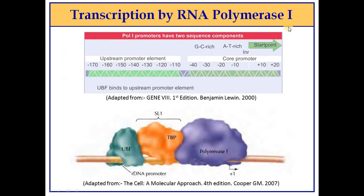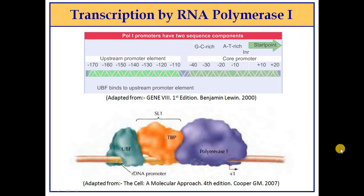For RNA polymerase 1, the promoter region contains two elements: the upstream promoter element and the core element. Transcription factor UBF binds to the upstream promoter element, soon accompanied by selectivity factor 1 (SL1). Both transcription factors act cooperatively and recruit RNA polymerase 1 to the transcription start site, where it begins polymerizing the RNA molecule.